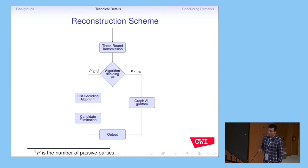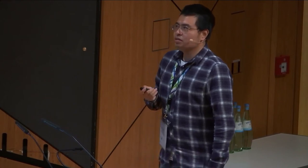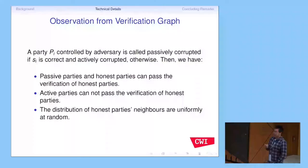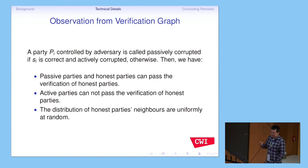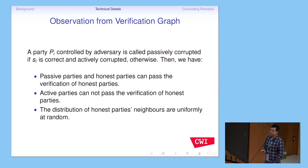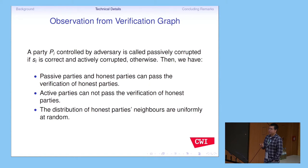We divide dishonest parties into two types: passive and active. This division is key to our analysis. The passive corrupted party does not corrupt the codeword symbol S_i — S_i is a symbol of the random code we used to encode the secret. The active corrupted party can corrupt anything. This is our definition of the corrupted parties.